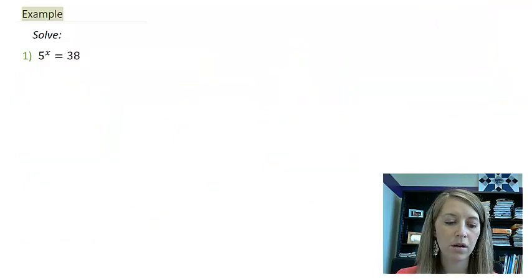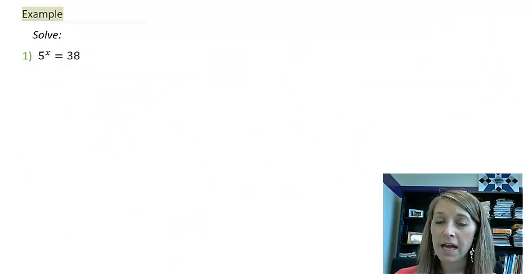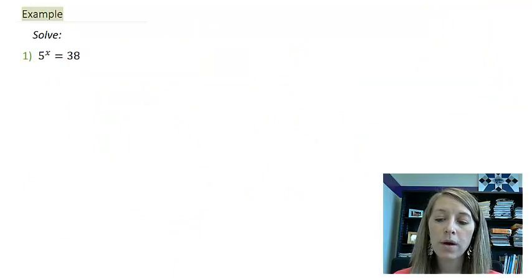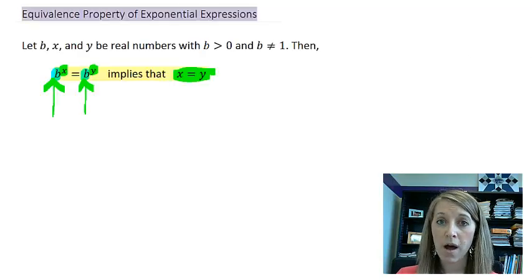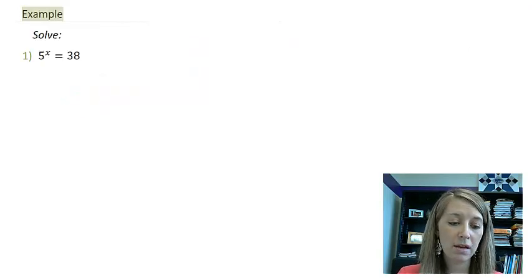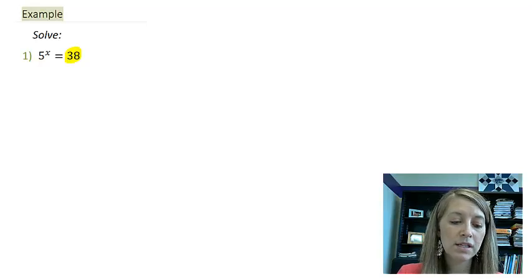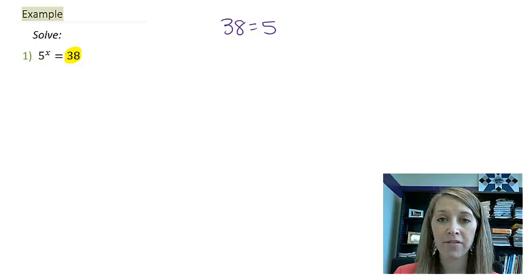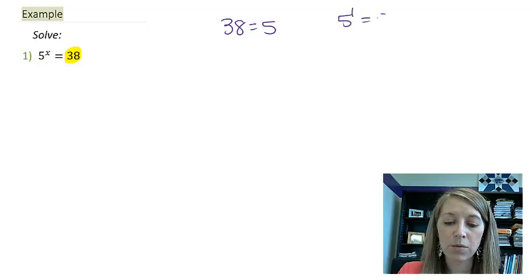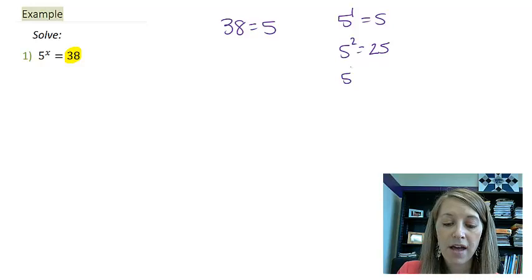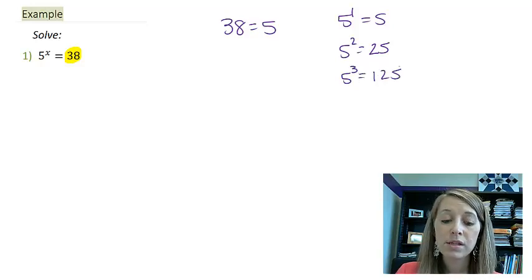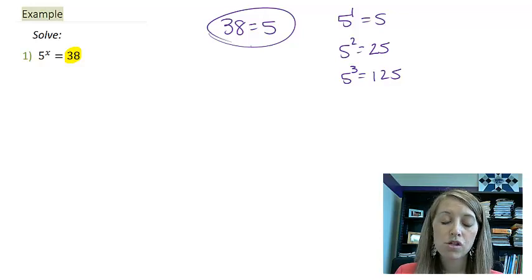Let me give you another example here. And this one is 5 to the x is equal to 38. Well, if we wanted to solve this one by using the equivalence property, we would need to set both bases equal to the same number. And so we could try and manipulate this 38 over here to see, can I rewrite it as a base of 5? Now, not with a number that I know automatically. I know 5 to the first is equal to 5, 5 squared is equal to 25, 5 to the third is equal to 125. And you can see that I skipped right over 38. So I will not be able to use my equivalence property because I cannot rewrite these in the same basis.